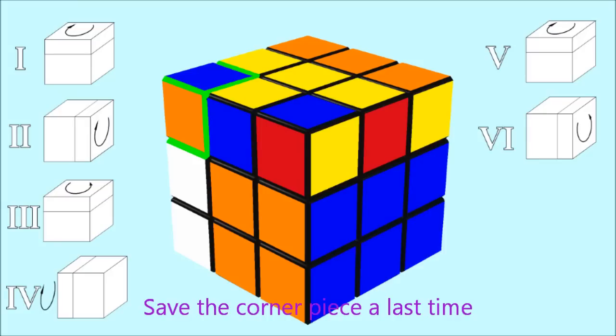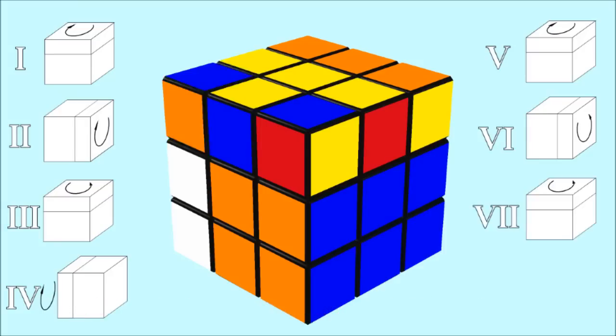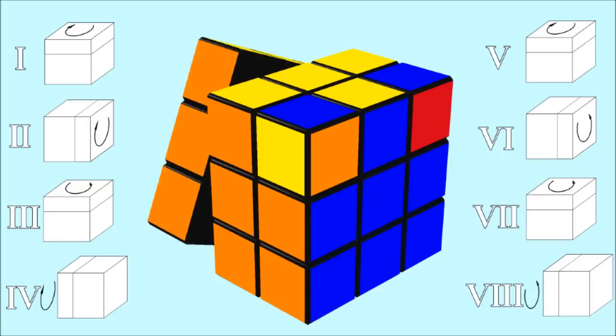And then rebuild the right layer by rotating it 90 degrees counterclockwise into its original position. Save the corner piece a last time by a 90 degrees clockwise rotation of the top layer. And finish by rebuilding the left layer by turning it 90 degrees clockwise. That's it.